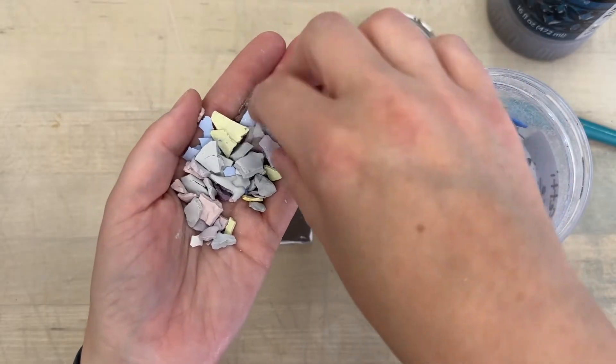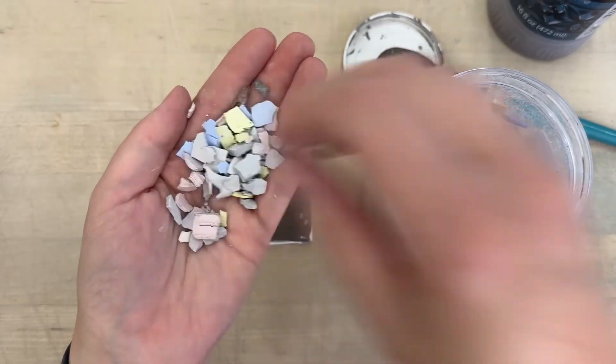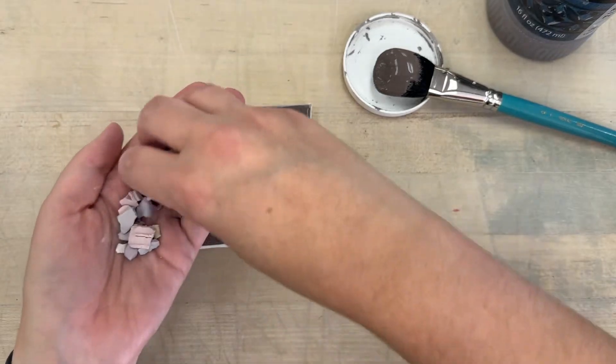Once I have the chunks that I want, and if I need to, I can break them down a little smaller. Now you don't know what color these are going to be.